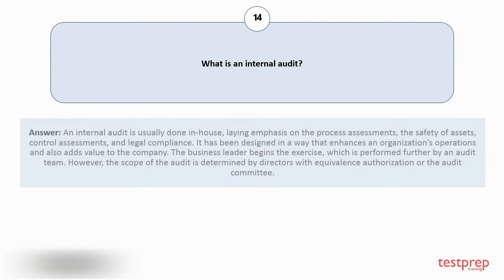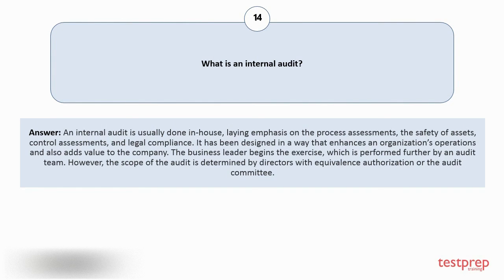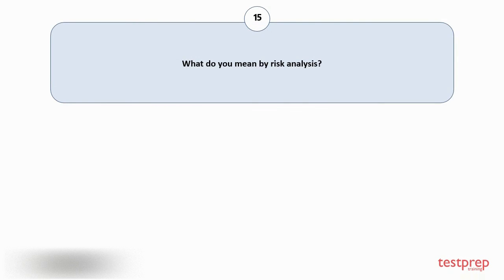An internal audit is usually done in-house, laying emphasis on process assessments, the safety of assets, control assessments, and legal compliance. It has been designed to enhance an organization's operations and add value to the company. The business leader begins the exercise, performed further by an audit team; the scope is determined by directors with equivalent authorization or the audit committee.